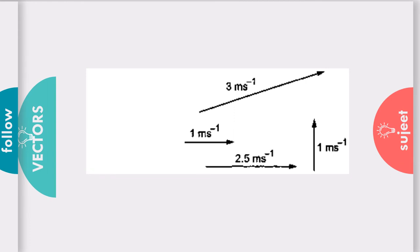These are the directions for the vector. Means it is having certain magnitude, 3 meter per second. You may see 1 meter per second, 2.5 meter per second, and 1 meter per second. These are nothing but magnitude. As you know, meter per second is the unit of speed.